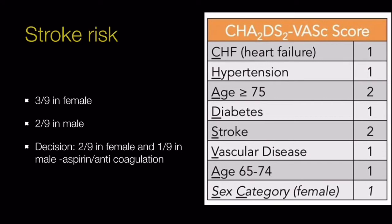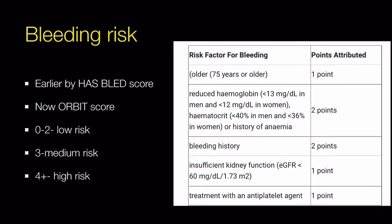If patients score 3 or more out of 9 in females, or 2 or more out of 9 in males, we must consider anticoagulation. If patients score 2 out of 9 in females or 1 out of 9 in males, the decision on aspirin versus anticoagulation is individualized based on clinical judgment. Before anticoagulation, always assess bleeding risk. Previously this was by the HAS-BLED score, but per the 2021 NICE guideline, the ORBIT score is now used.